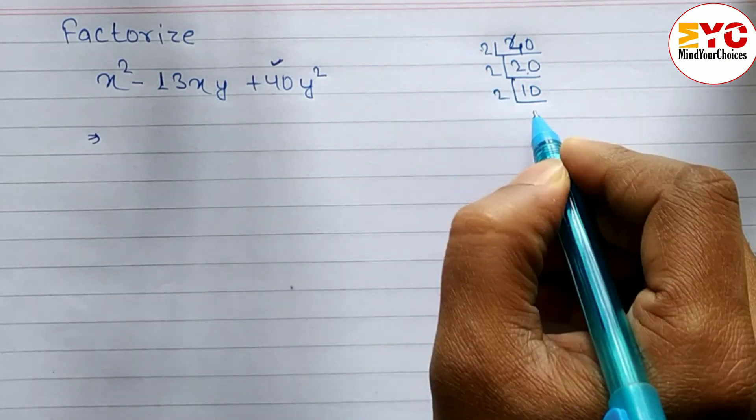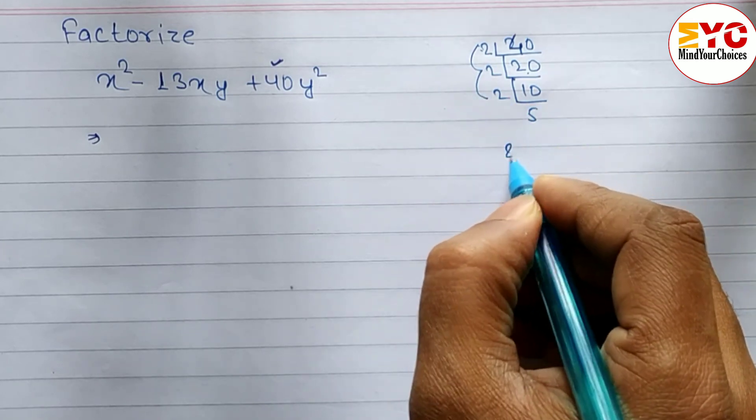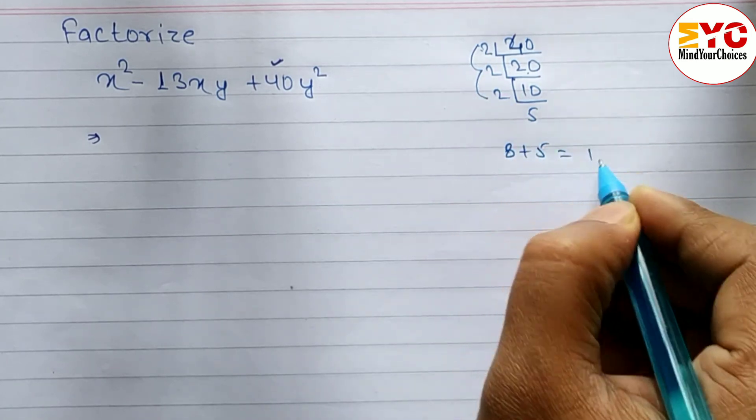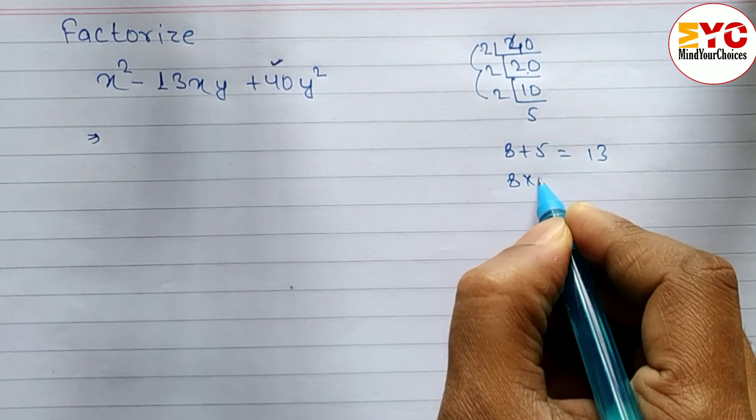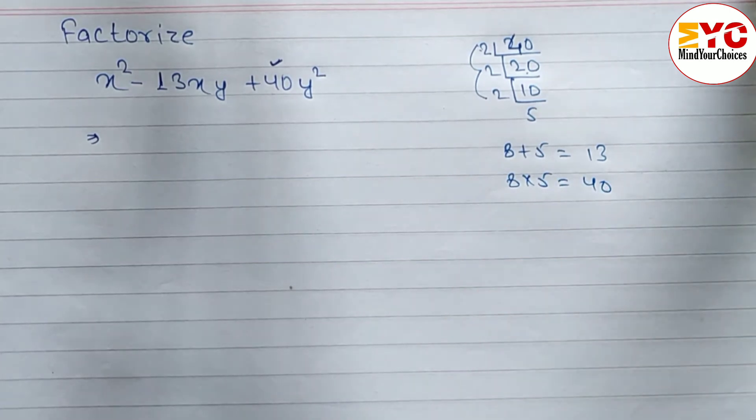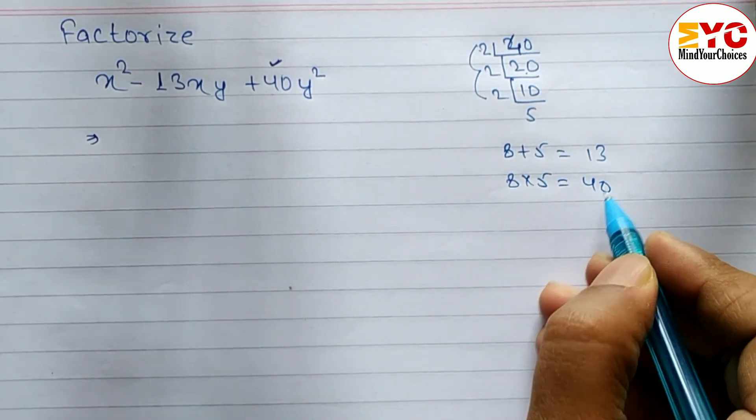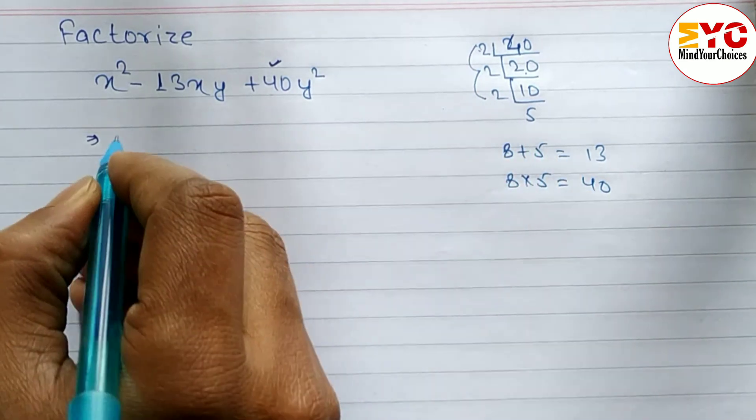Now try 8 and 5: 8 times 5 equals 40, and 8 plus 5 equals 13. Yes! We found the factors: while multiplying we get 40 and while adding we get 13.